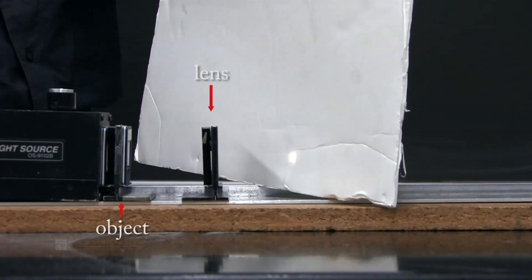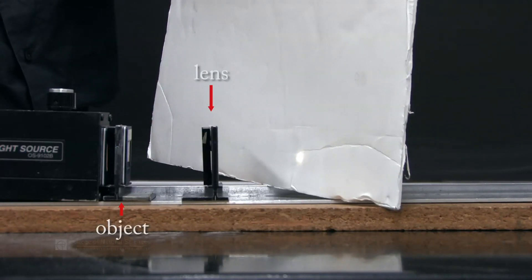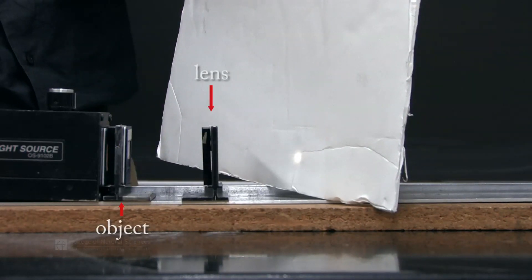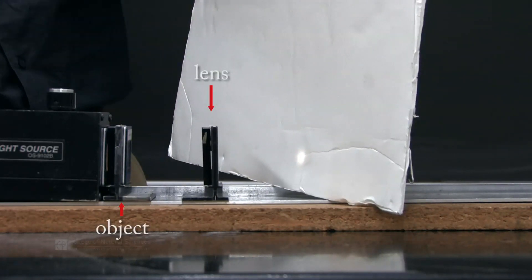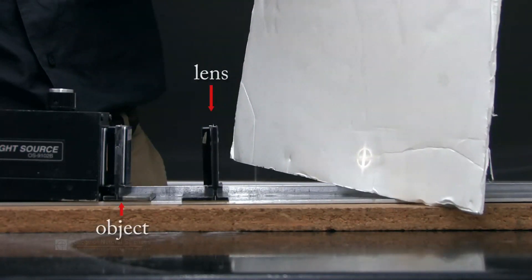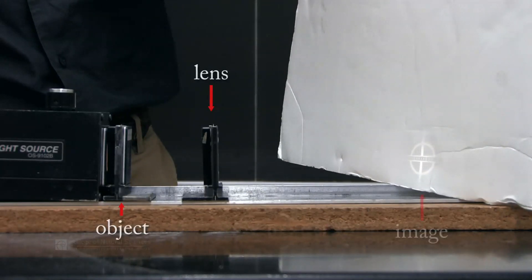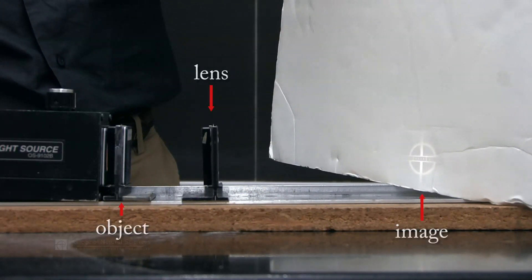We see that a spot of light shows up. However, this doesn't actually show what we want to see, so we're going to move the card. At some point, we'll notice that an image shows up, and when this image comes into focus, this is what we mean by forming an image.